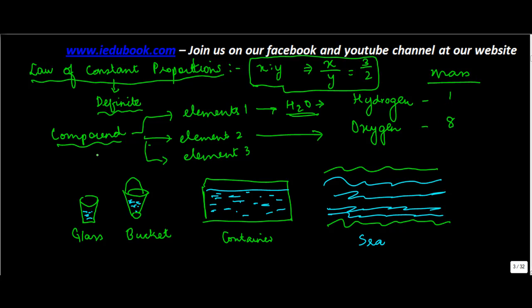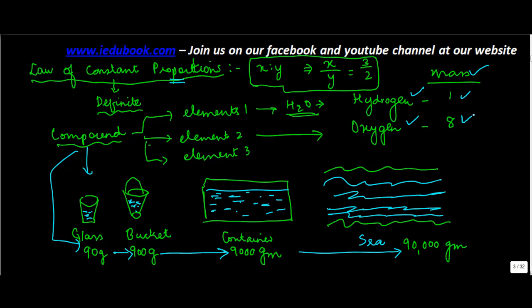So the ratio of hydrogen to oxygen in water is 1 is to 8 by mass. Now what does this mean? Let's say the glass contains 90 gram mass. This is let's say 900 gram mass. This is let's say 9,000 grams and let's say this is 90,000 grams. Now the law of constant proportion says that whatever be the quantity of the compound, whether it be 90, whether it be 900, whether it be 9,000 or whether it be 90,000, whatever be the quantity of the compound, the proportion of hydrogen and oxygen by mass will always be 1 is to 8.